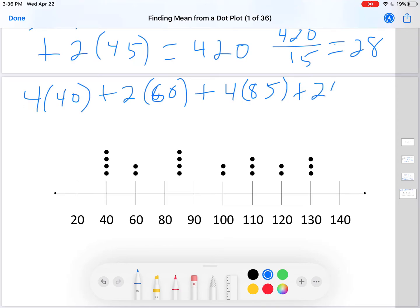4 times 40 plus 2 times 60 plus 4 times 85. I know that's 85 because it's halfway between 80 and 90. Plus 2 times 100 plus 3 times 110 plus 2 times 120 plus 3 times 130. This equals 1780.